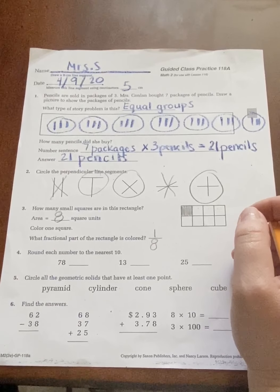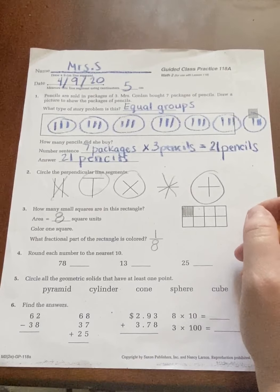All right. Number four. Round each number to the nearest ten. Now this is the one.